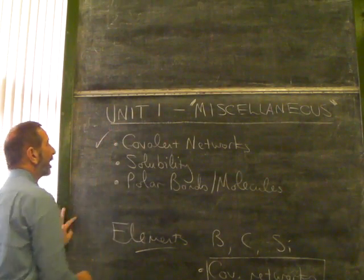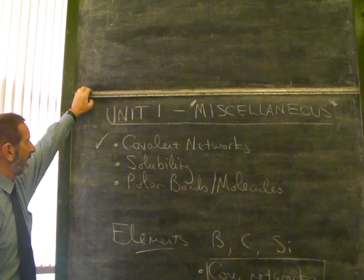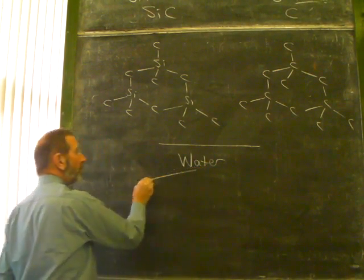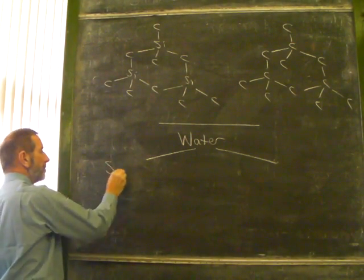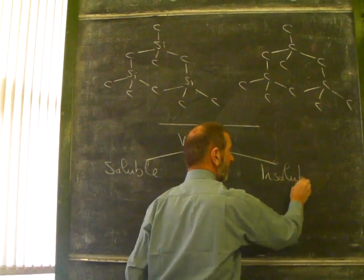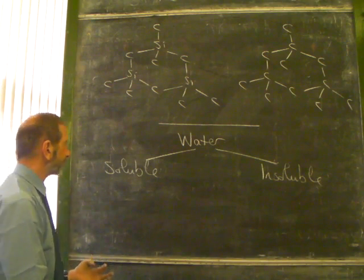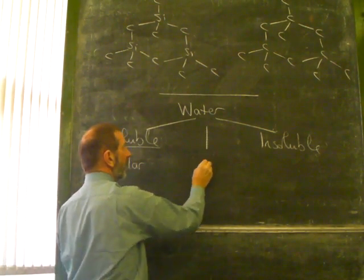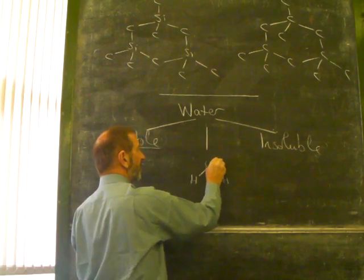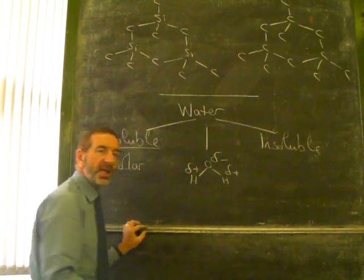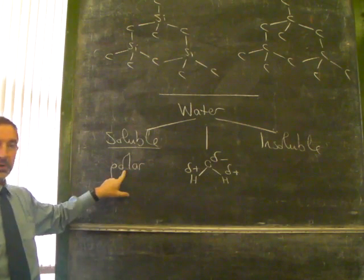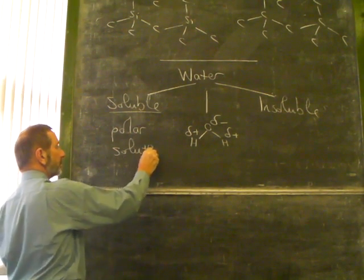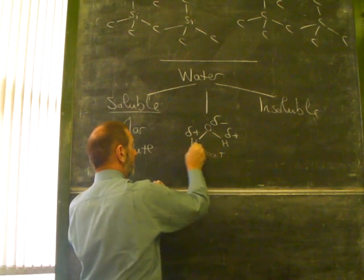So that's covalent networks now. Here's another little thing that bubbled up in unit one that is worth checking out. Solubility. Why do some substances dissolve in water and others don't? Well, we know that when you try to dissolve some substances, some are soluble and some are insoluble. Now this is a huge oversimplification, but it's all we need at this stage. For a substance to be soluble in water, it needs to be polar.